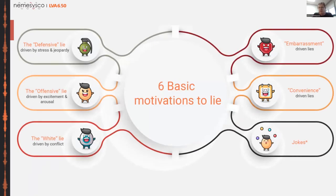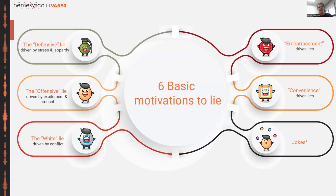We define six different types of lies, all driven by different motivations. The most common is the defensive lie — lying to protect myself from getting hurt. This is driven by stress, wanting to distance myself from a situation. Then there is the offensive lie, when I lie to gain something extra — like inflating an insurance claim. This comes from a very different motivation, with completely different expectations and emotional reactions.